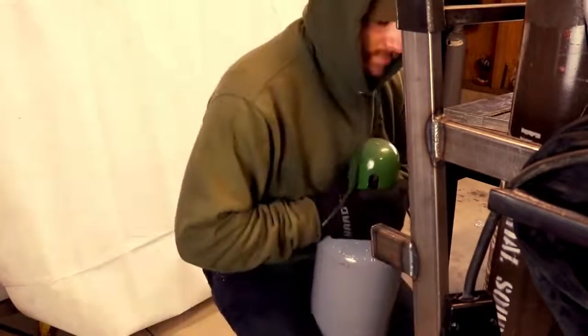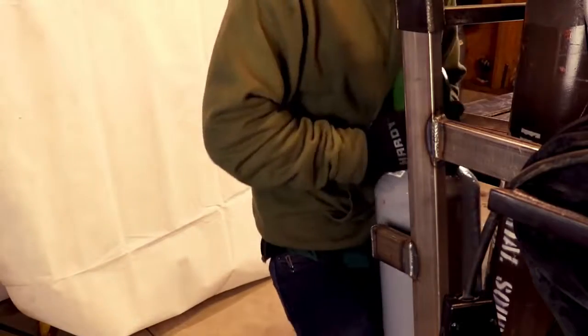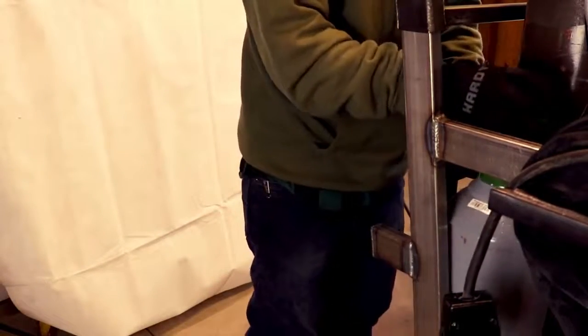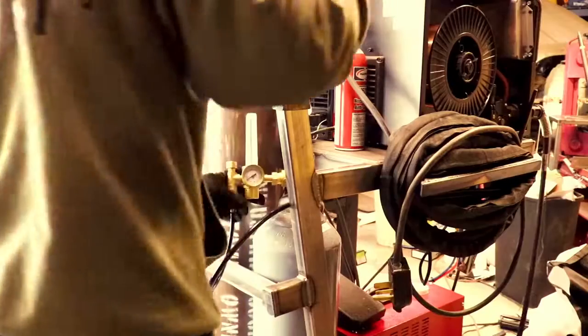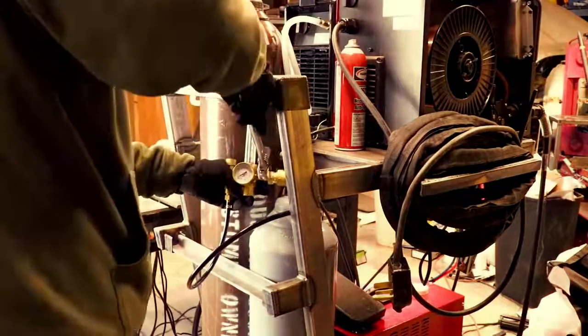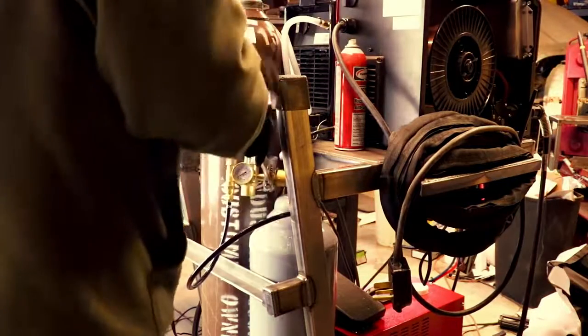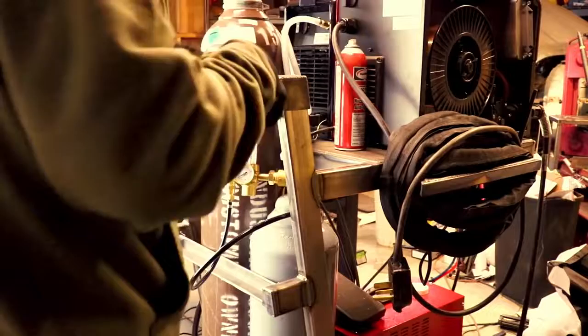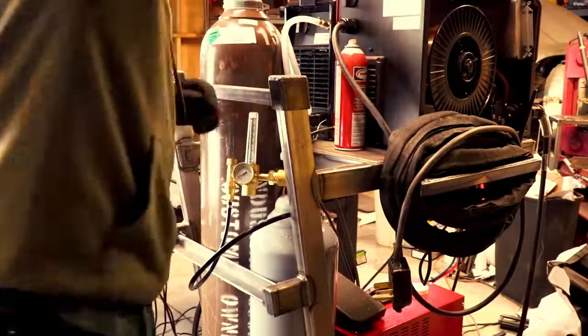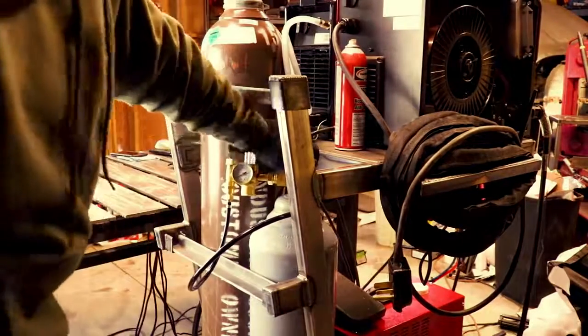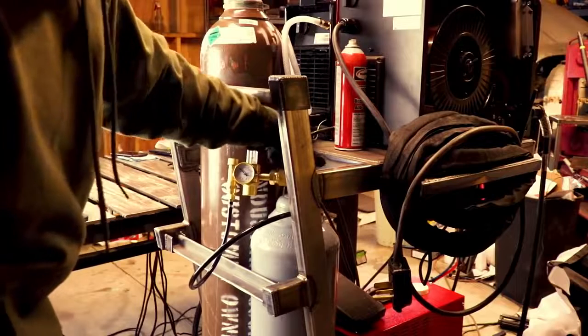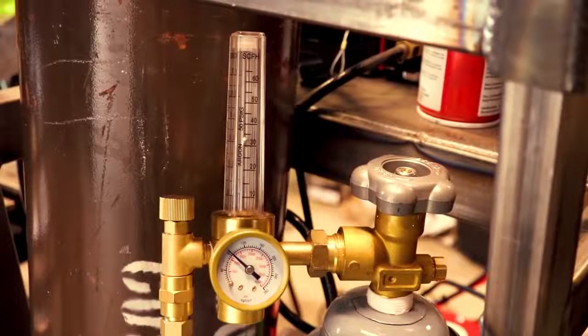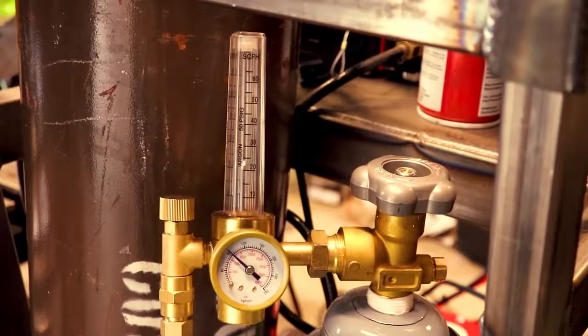The first step in running pulse MIG is to change out your gas. This HTP is set up to run pulse MIG on steel with either a 90-10 or a 92-8 mix gas. There's other gases that you can use for pulse MIG, but that's what this machine was built to run. This bottle I have here is a 90-10 mix. That means it's 90% argon and 10% carbon dioxide. I'm going to set my gas flow around 30 CFH.